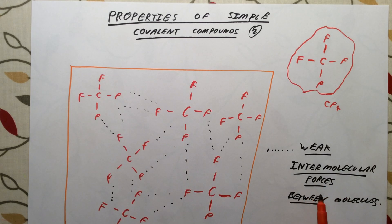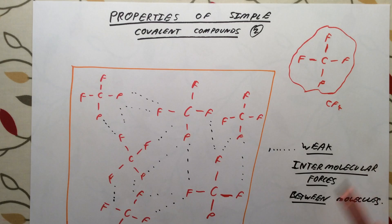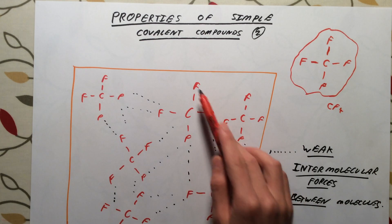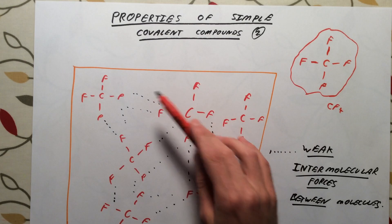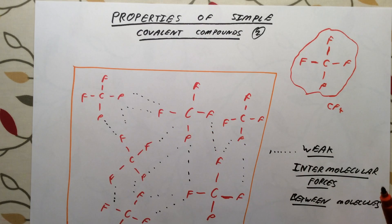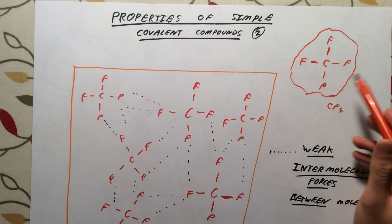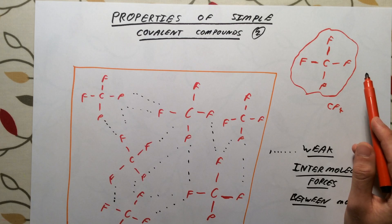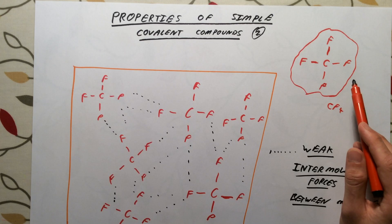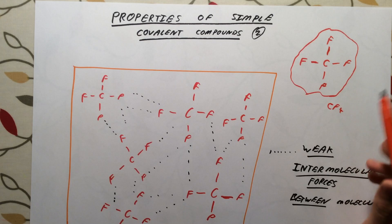Because these forces are weak, it does not take much energy to overcome them. To either melt or boil a sample of CF4, all we need to do is overcome these weak forces. As soon as these molecules are free to float about wherever they want, it's going to be a gas. So CF4 is a gas at room temperature. You would have to get it extremely cold to turn it into a solid. CF4 and most simple covalent compounds have very low melting points and boiling points.